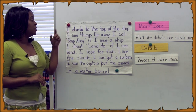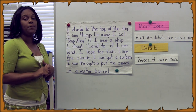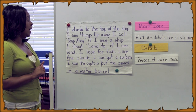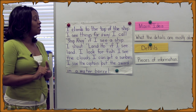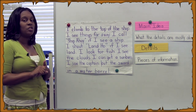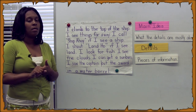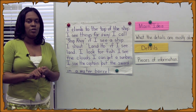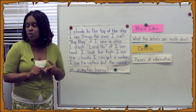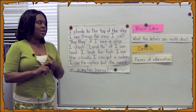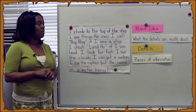This person climbs to the top of the ship. They can see things from far away. And when they see those things, they call ship ahoy. If they see land, they say land ho. They look for fish. They can see the clouds and they get a sunburn — so that probably means they're high up on the ship and close to the sun. They can see the captain put the sword in a water barrel. So which one of those options do you think? Read the paragraph closely, look for the details, and that way you will be able to figure out the main idea. I know you can do it.